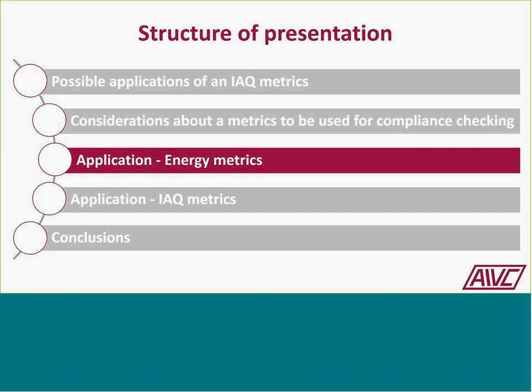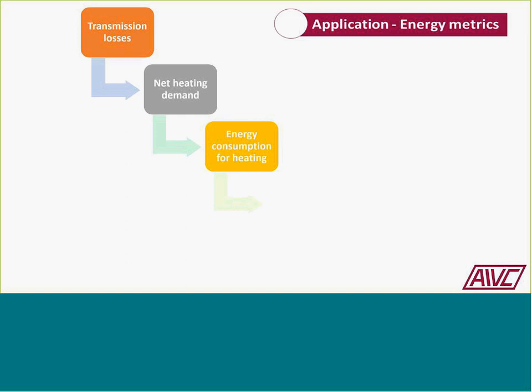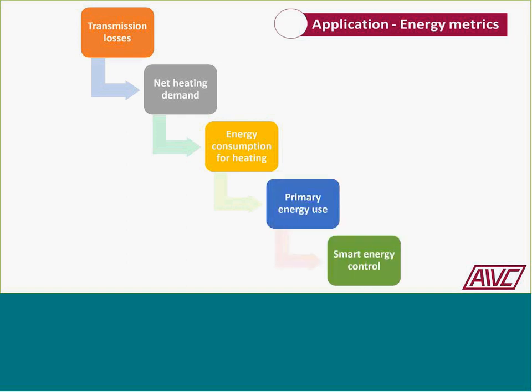Turning to energy metrics applications: over time, the specifications used for energy-related parameters have evolved. In the 1970s and 80s, requirements focused on transmission losses expressed as the U-value, then progressed to net heating demand, energy consumption for heating, and then primary energy usage. Now, in the context of the European Energy Performance Directive, there is also expansion toward smart energy control. Each stage focused on specific aspects of a building with different elements.